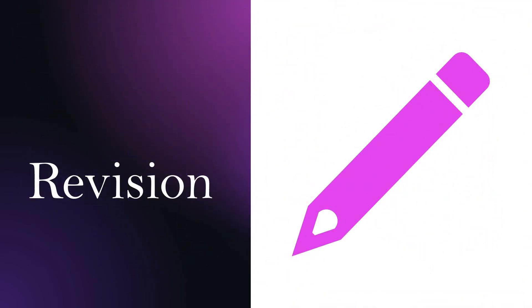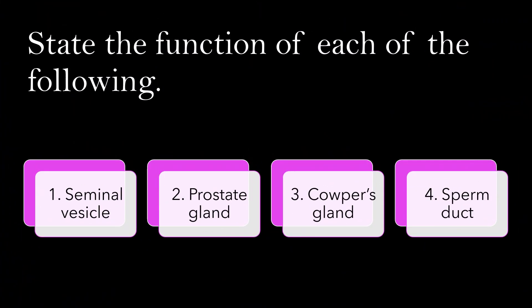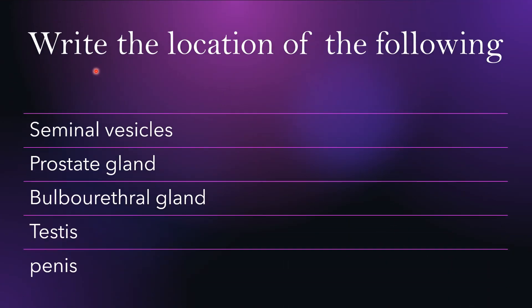Let us go through revision. State the function of each of the following: seminal vesicle, prostate gland, Cowper's gland, and sperm duct. Also write the location of the following: seminal vesicle, prostate gland, bulbourethral gland, testis, and penis. Go through the slides and find out the answers.